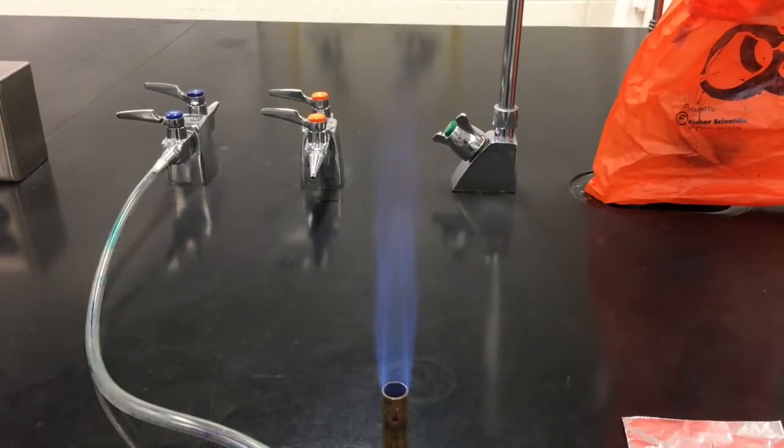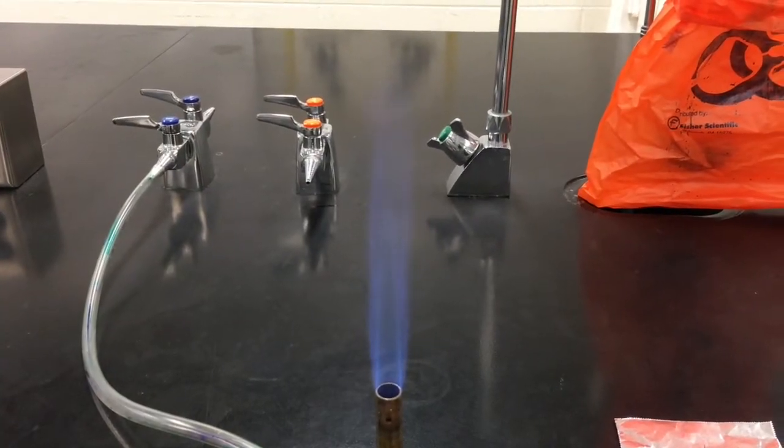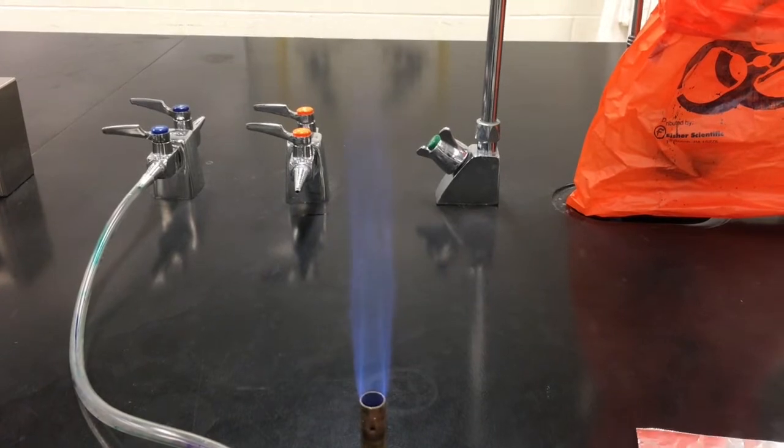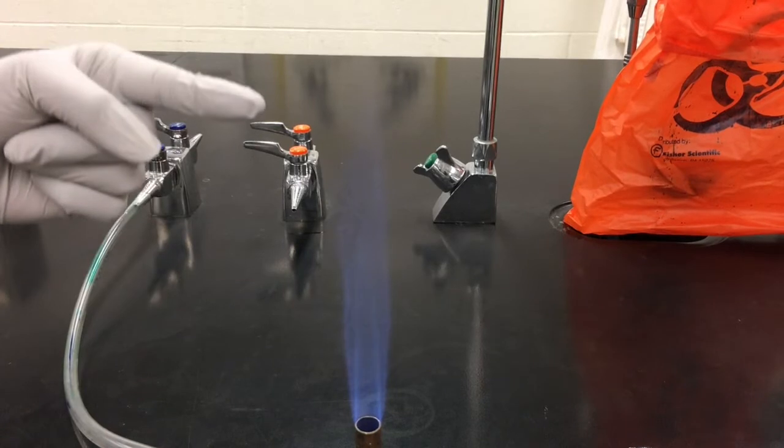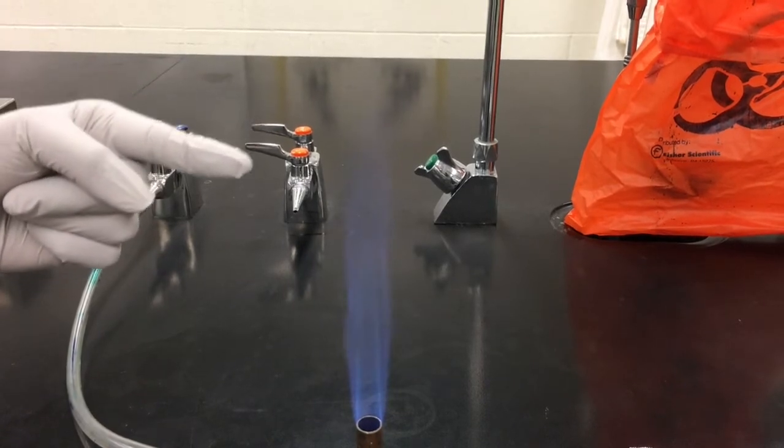You should be able to visualize two different cones, an inner cone and an outer cone when you have properly set your Bunsen burner. So if you see here the inner cone is the hottest part of the flame, the outer cone is not as hot for sterilization.